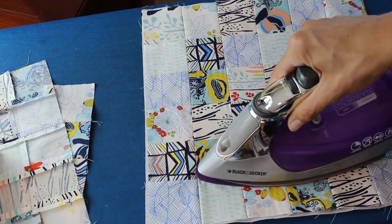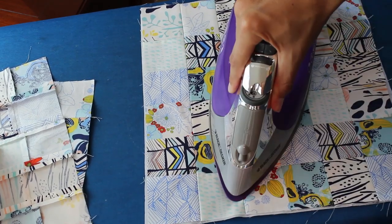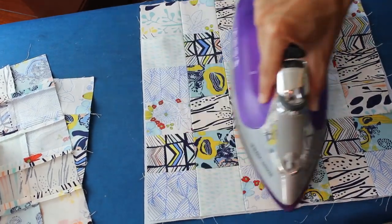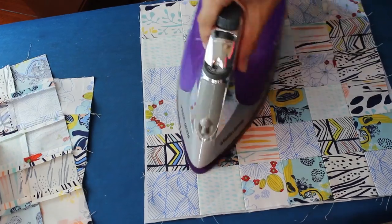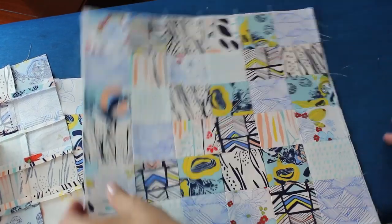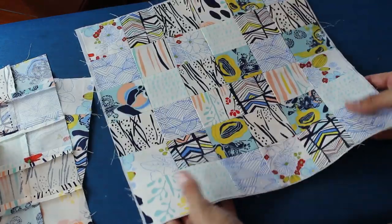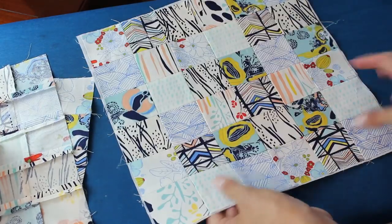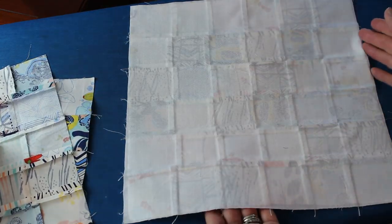So here we are going to attach the fusible to the patchwork which is a little bit tricky because of all those seams. So you want to start in the middle and work your way out making sure that it is all nice and attached. You can see what a nice body that it gives and it gives a good stiffness for a bag. So here's what the back looks like.